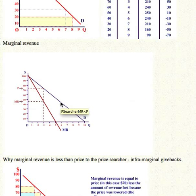So, if this is the demand curve to a price searcher that charges one price to everyone, this will be the marginal revenue curve. It will have twice the slope of the demand curve.